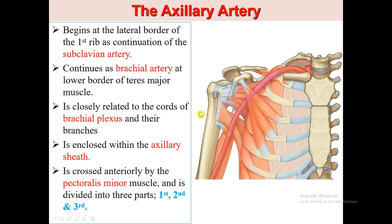The axillary artery is closely related to the cords of the brachial plexus and their branches, and it is enclosed within the axillary sheath with the other structures in the axilla. It is crossed anteriorly by the pectoralis minor muscle and divided into three parts: the first part proximal to pectoralis minor, the second part posterior to it, and the third part distal to pectoralis minor.